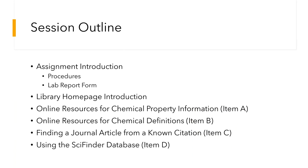Here's the outline for the session. First we'll talk about the assignment, the procedure sheet, and the lab report form. Then there will be a brief introduction to the library homepage. Then we'll look at online resources for chemical property information, which is item A of the procedures. Then we'll look at a couple of resources for finding a chemical definition, which is item B. Item C is finding an article from a known citation. And finally we'll explore the SciFinder database to answer item D in the procedures.